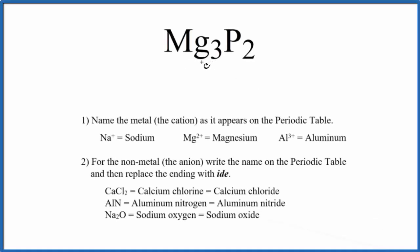To write the name for Mg3P2, we first need to recognize that this is an ionic compound. We have a metal bonded to a non-metal. Metal and non-metal, that's an ionic compound.